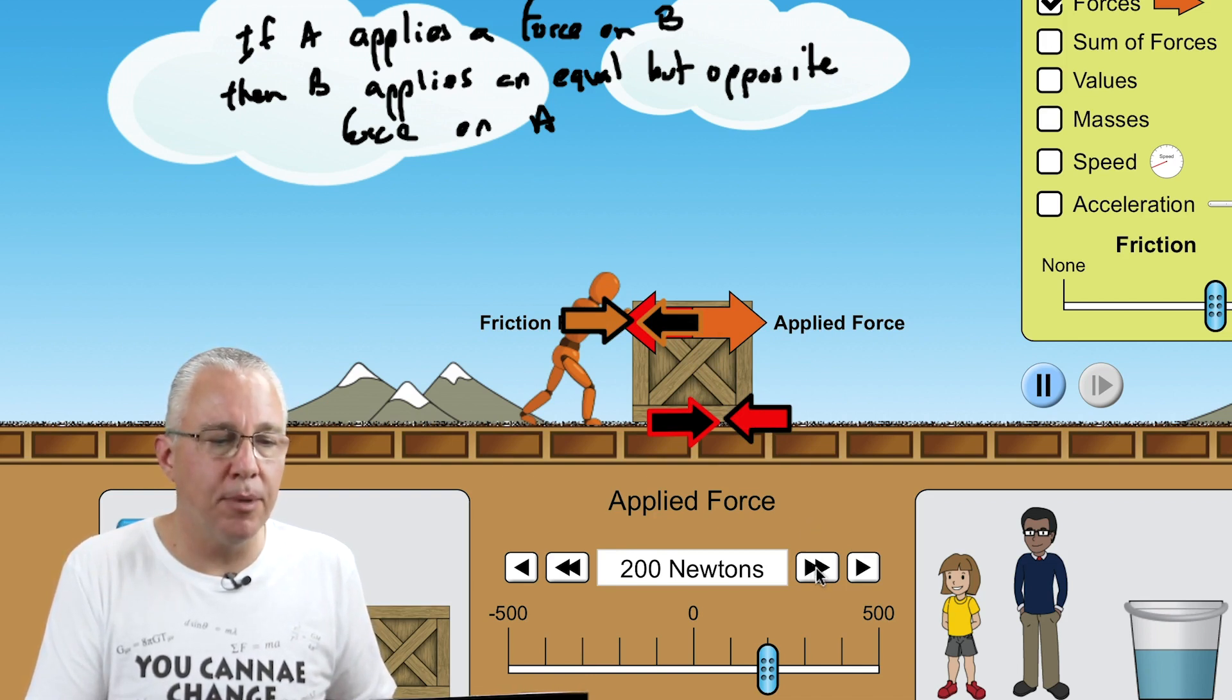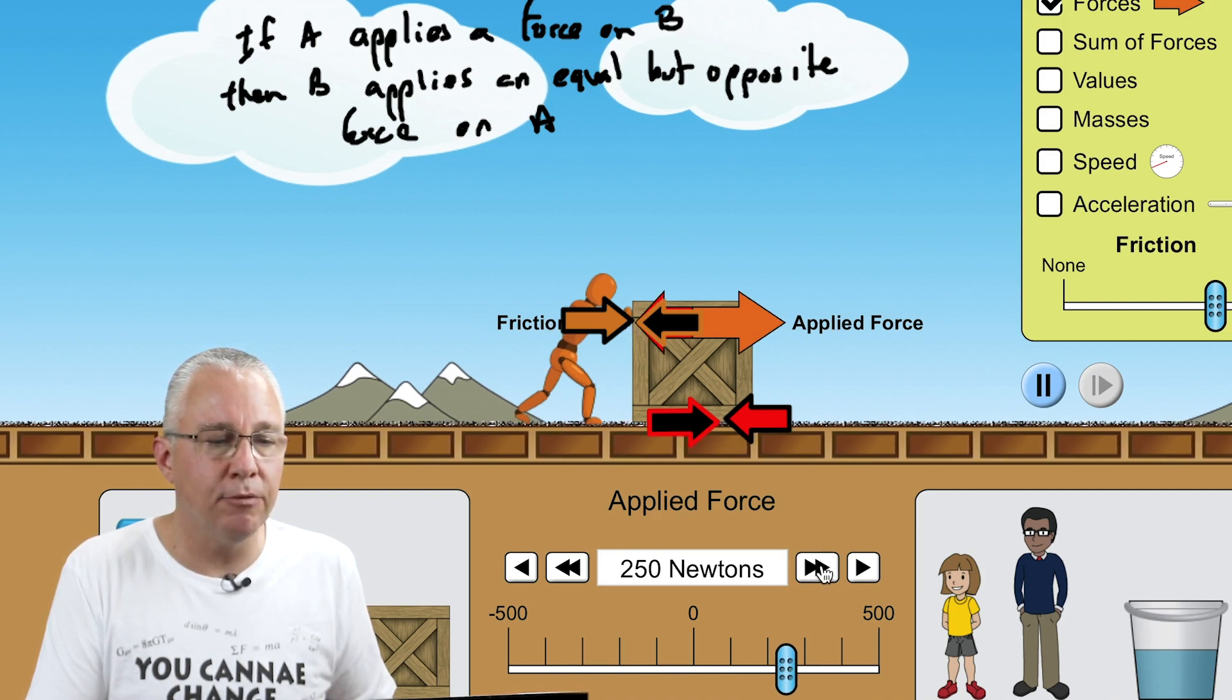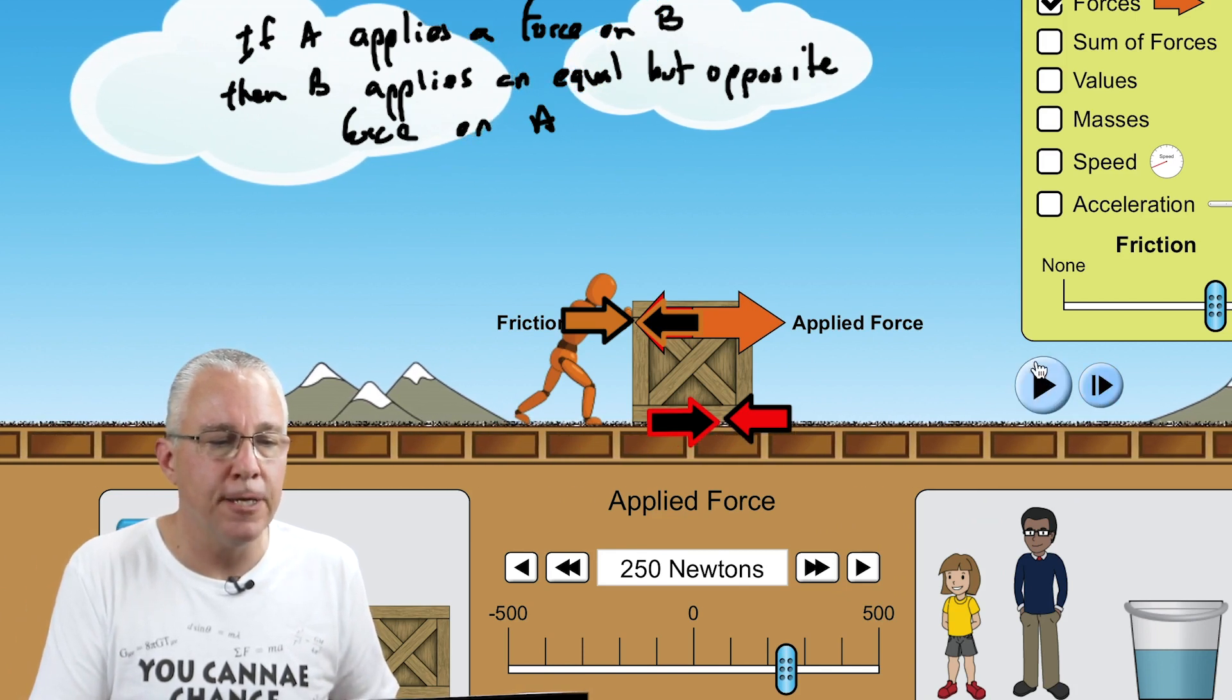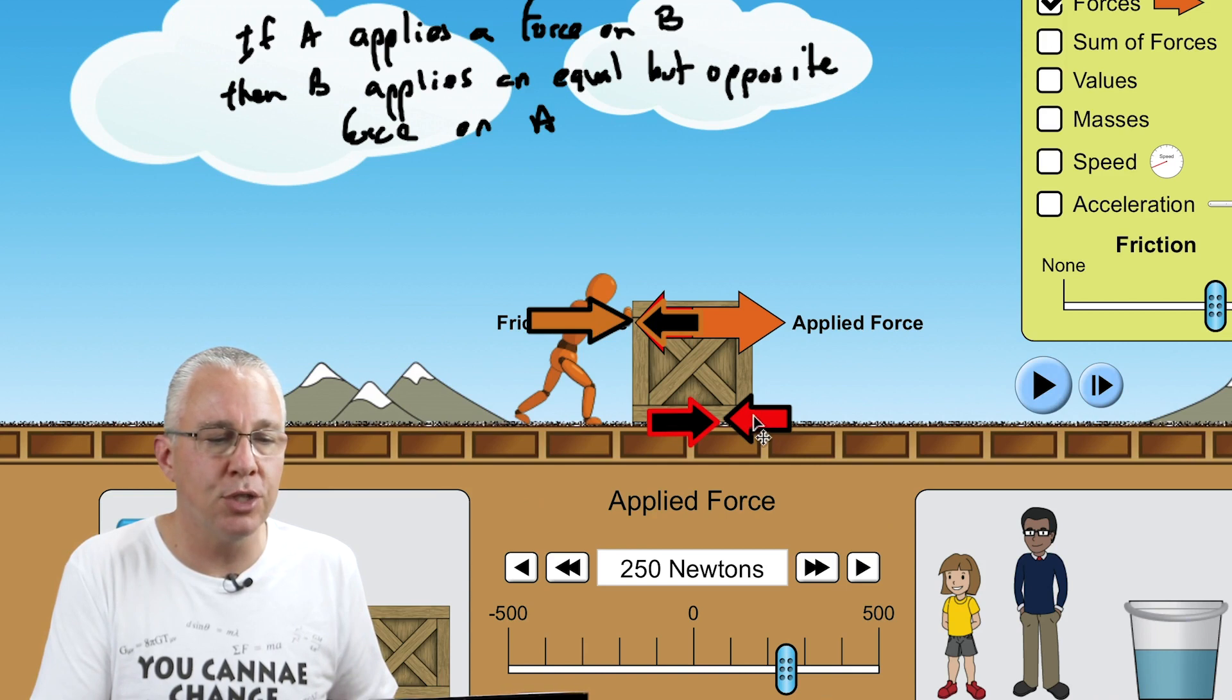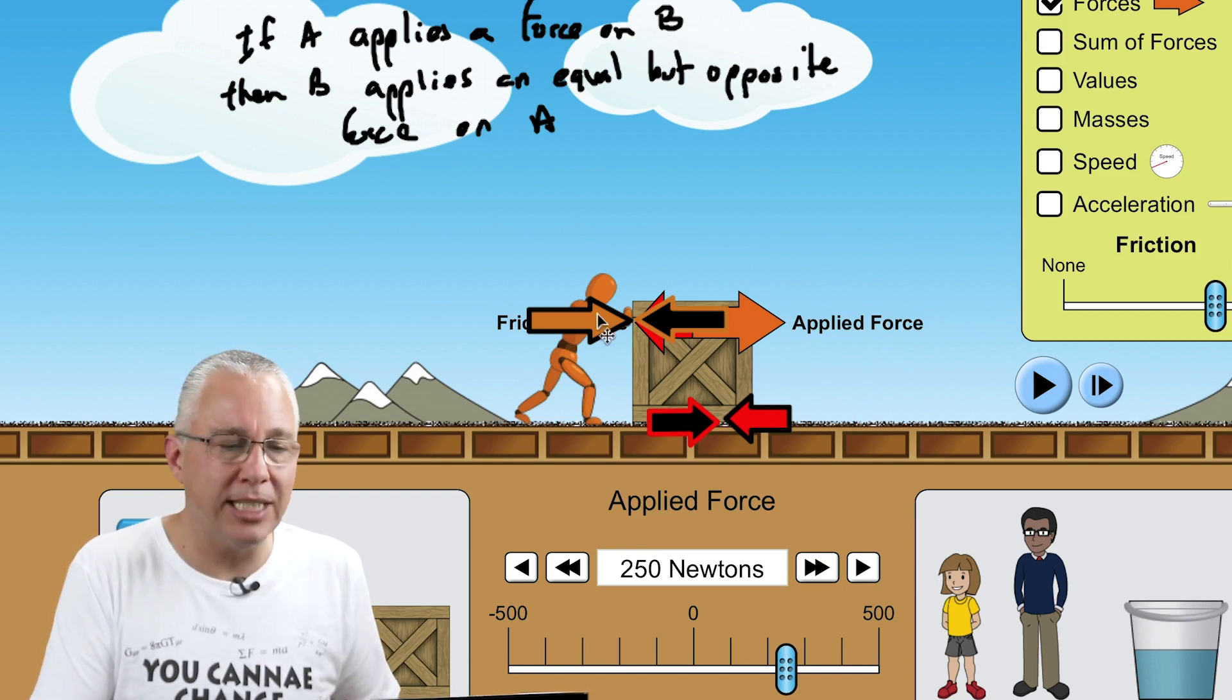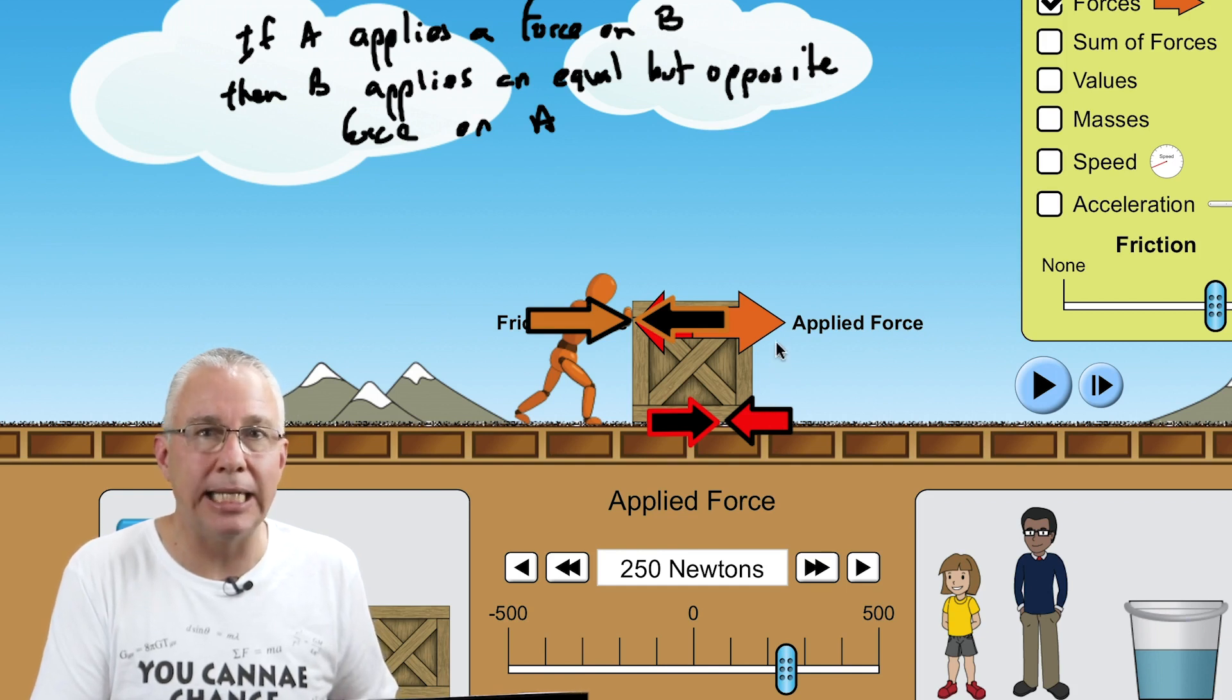There comes a point in time when the box will start to accelerate because we start to get an uneven force. So here it is and it's an acceleration. Now you'll see that the force of the applied force is larger than the force of friction. But this force increases now as well because the force of A on B equals the force of B on A. These two are equal, but the object accelerates because of this force and this force being unequal because they're the forces acting on the block.